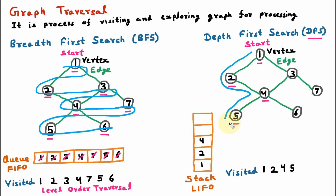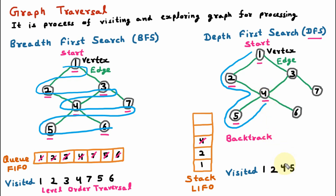Since we are at the complete depth and have no further solution, the stack guides us for backtracking. The top element of the stack is our next destination, so we take out 4 — meaning we go back to vertex 4. From vertex 5 we backtrack to vertex 4. We are on vertex 4 again: visit is already done, so we skip that and go to explore. We check the neighbors and find neighbor 6. Before going to vertex 6, we store vertex 4 into the stack.